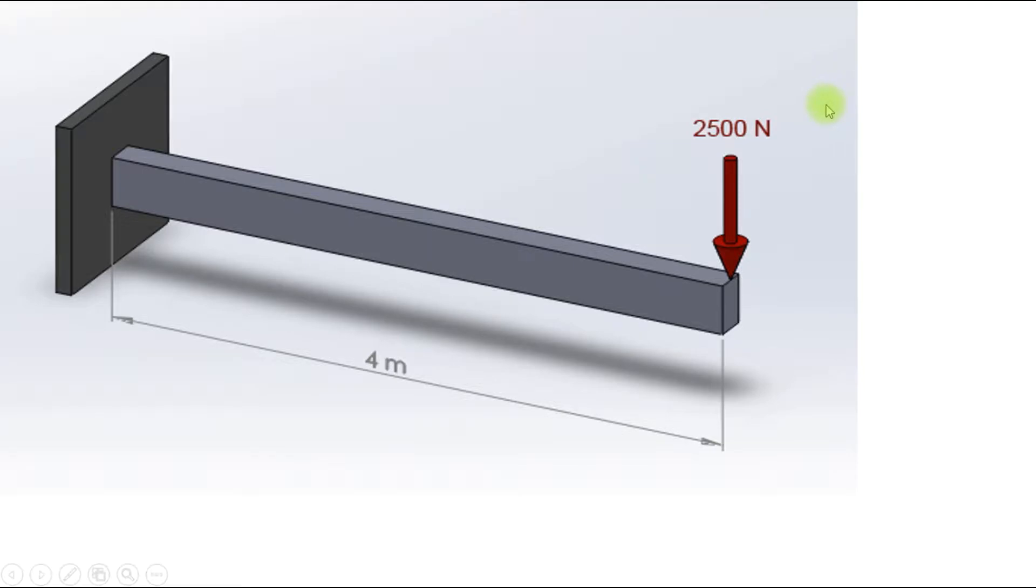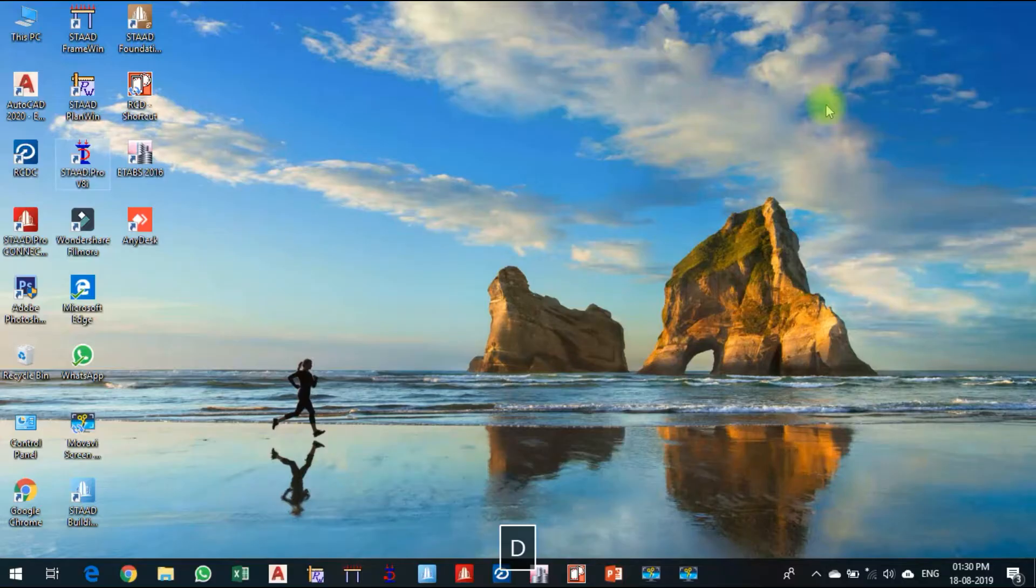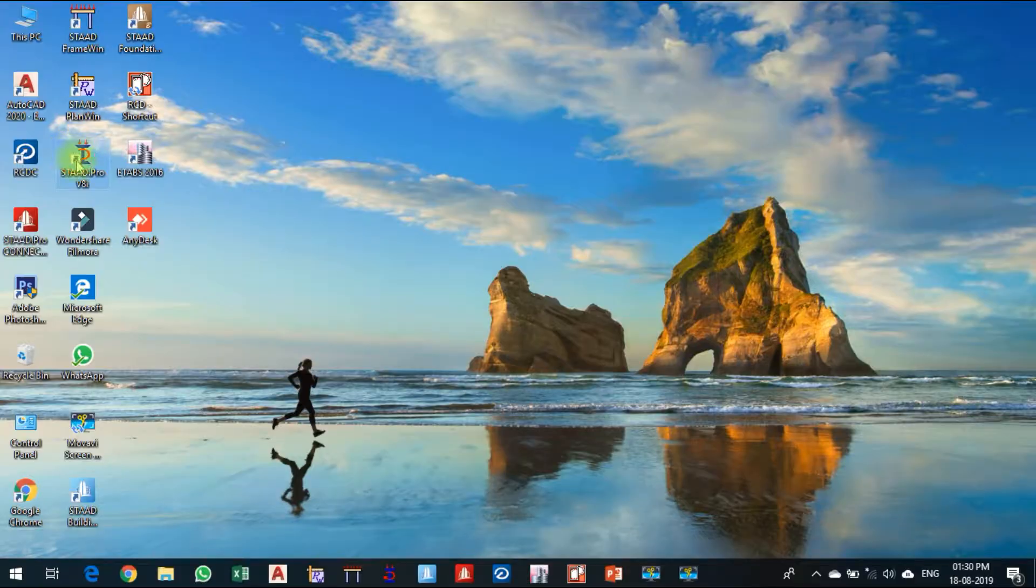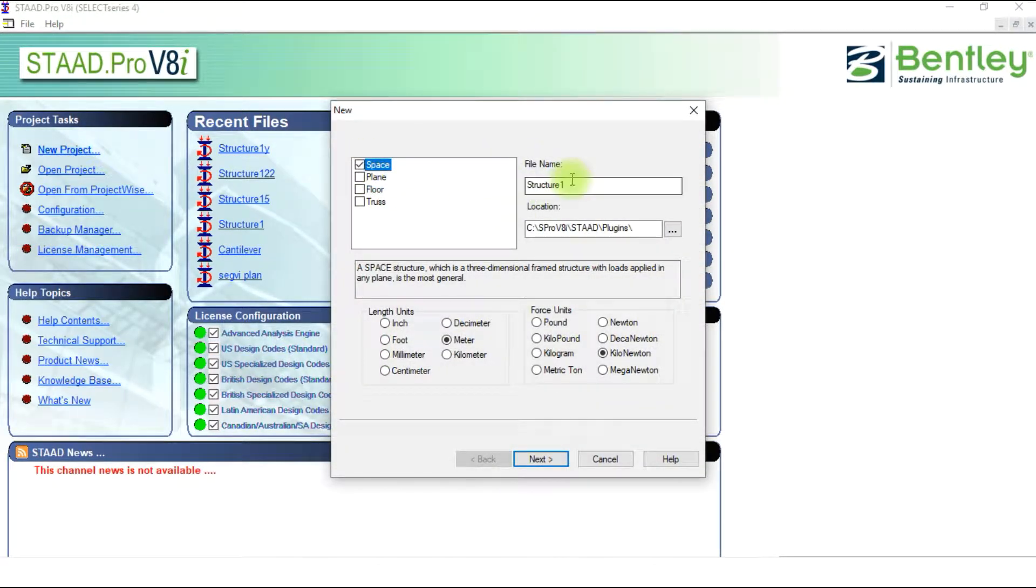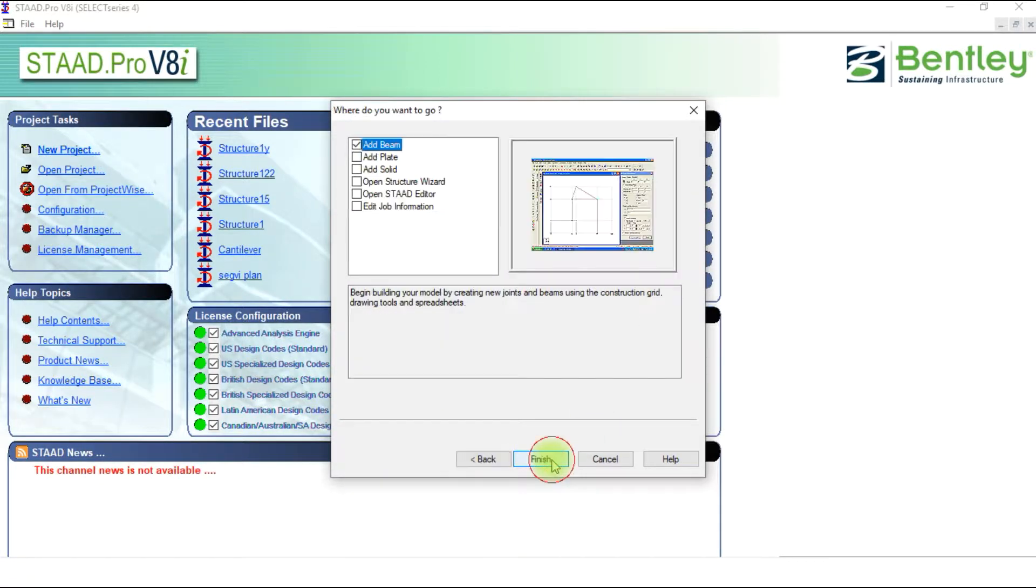Let's check it out in STAAD Pro. Open STAAD Pro, go with a new project space, give a name, length unit meter and force unit Newton, next finish, and add beam.